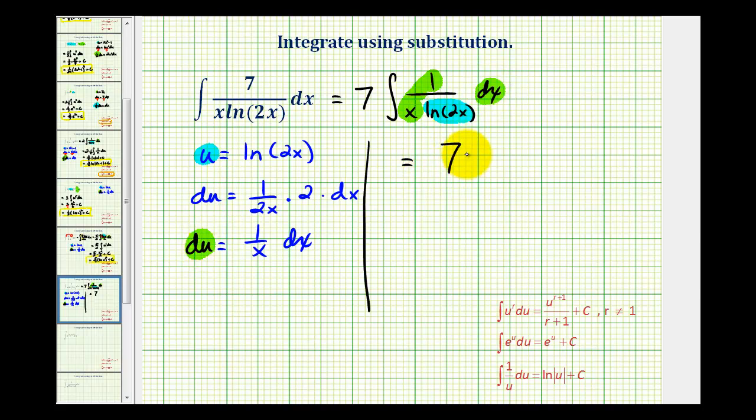So we'd have seven times the integral of one over u from the blue part, and then from the green part we have du.